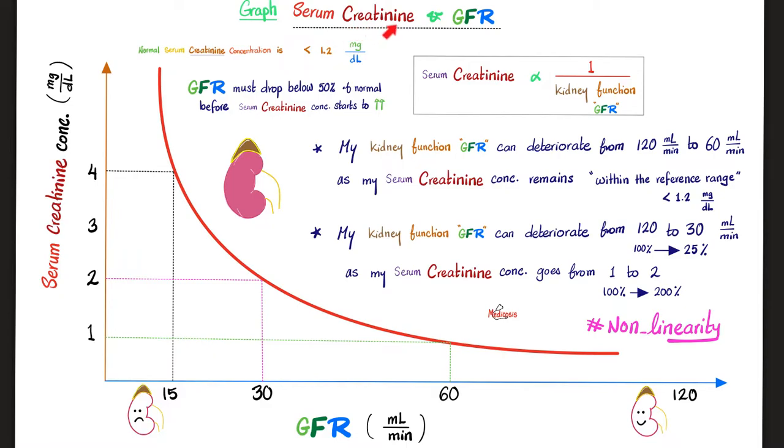Now let's talk about the serum creatinine and the GFR relationship. First, look at the axes. What do we have here? GFR. And what do we have here? Serum creatinine concentration. Now let's look at the shape of the graph. It looks similar to the inverse relationship. However, it's non-linear. Since it's inverse, you can argue that as my GFR deteriorates, my serum creatinine increases.